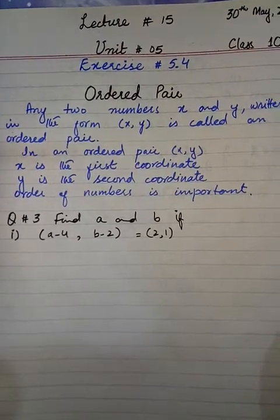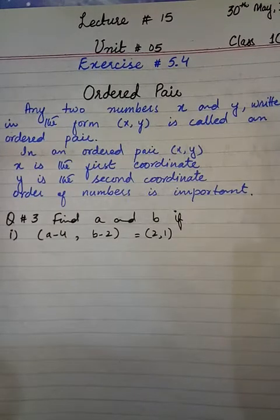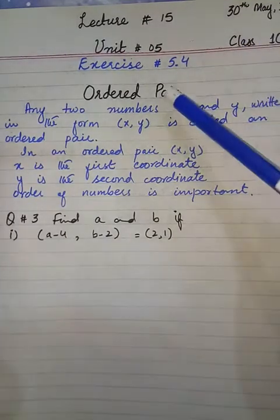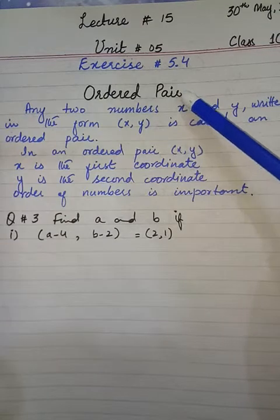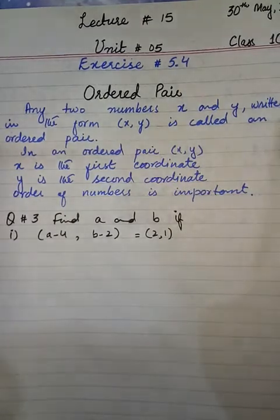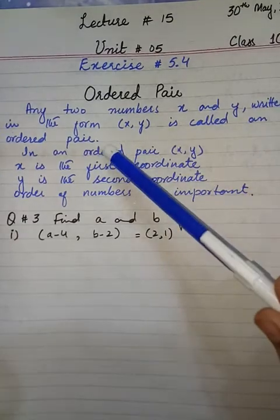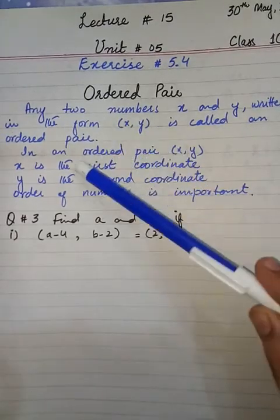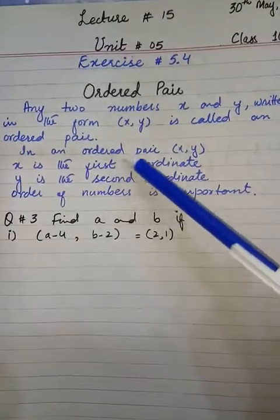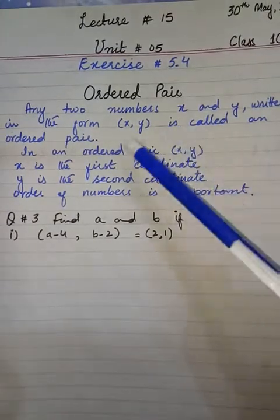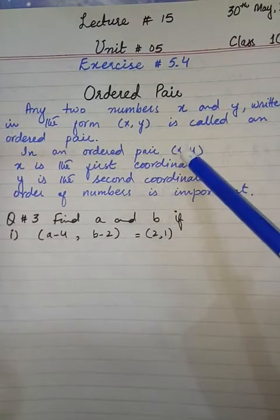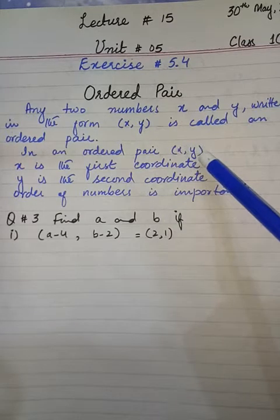Today we are going to start exercise 5.4 and before that we are going to learn ordered pair. Any two numbers X and Y written in the form like this is called an ordered pair. In an ordered pair X, Y, X is called first coordinate and Y is called the second coordinate.